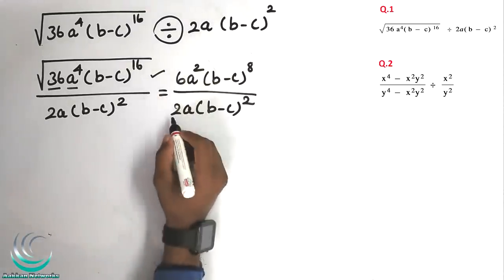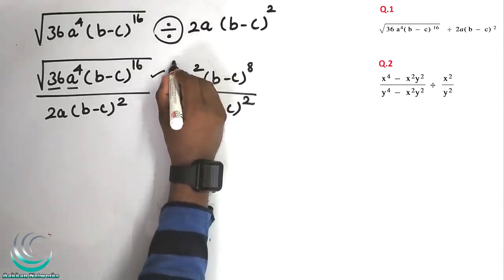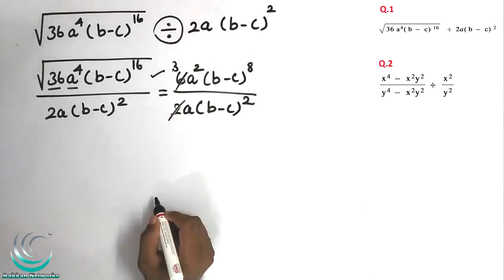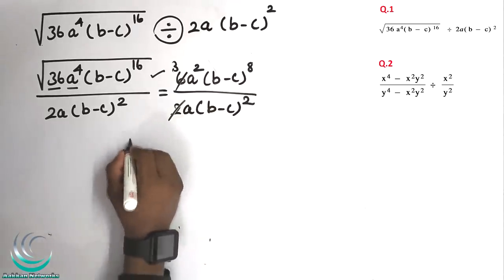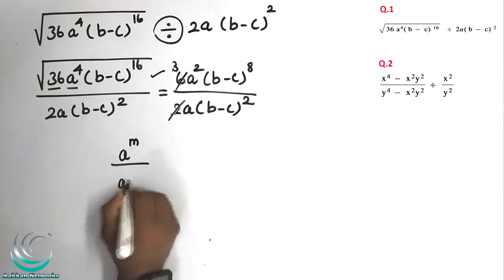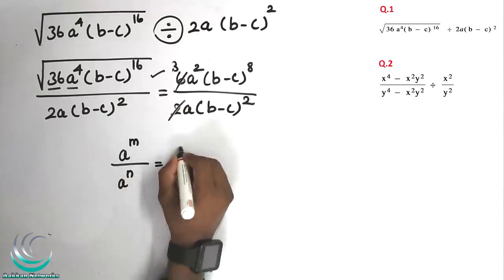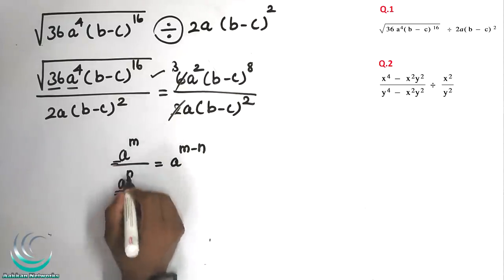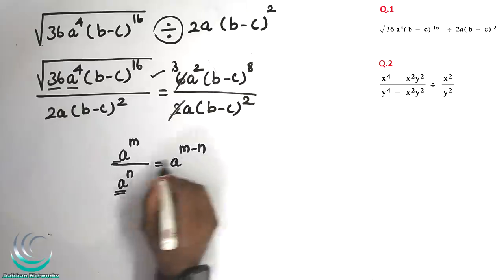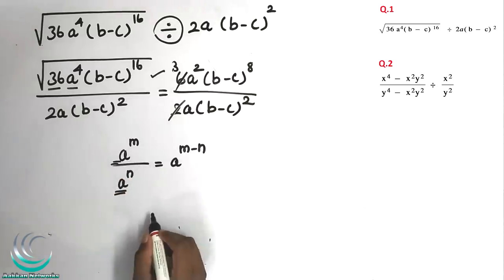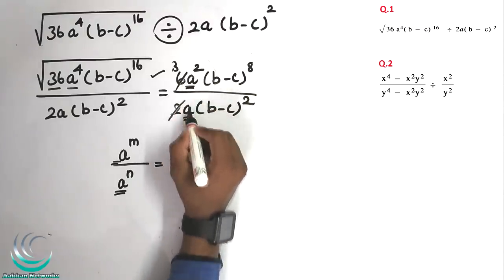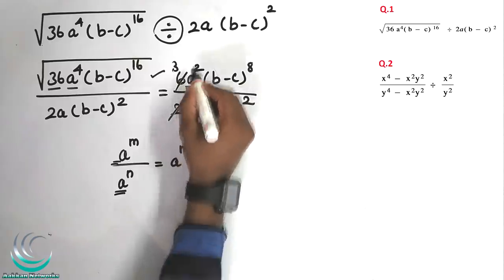We have a formula: a power m divided by a power n equals a power m minus n. So what we do is subtract the two powers. When dividing, we minus the powers.